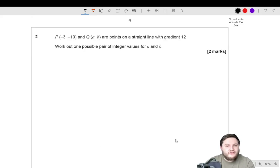Okay, let's move on to question 2. P is (-3, -10) and Q is (a, b), points on a straight line with gradient of 12. Work out one possible pair of integer values for a and b. Okay, so there are actually going to be infinitely many values for a and b, right? Because Q could be any point on the line, as long as it is a line with gradient of 12. So basically, you've got a point P here, and it's going to have -3 and -10, right? And Q has to be (a, b), and a and b have to be positive, but they have to be integers.